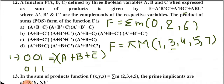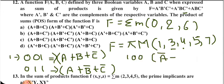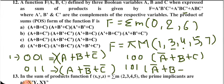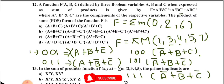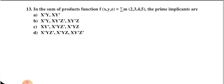Checking the options: option B has all 5 sum terms — A+B+C̅, A+B̅+C̅, Ā+B+C, Ā+B+C̅, and Ā+B̅+C̅. Matching each term confirms that option B is the right option.